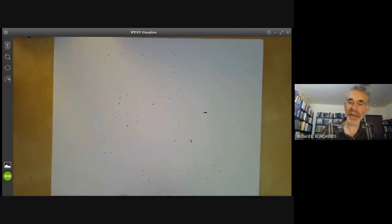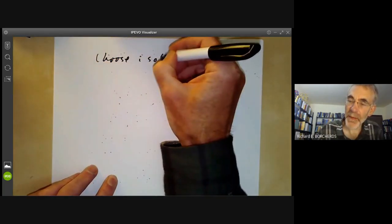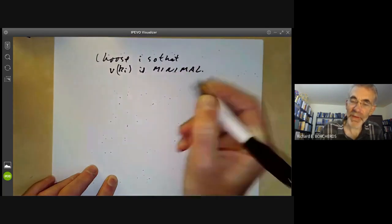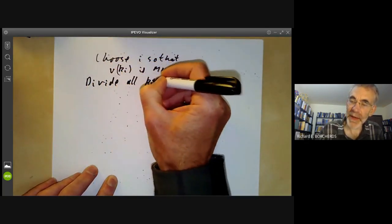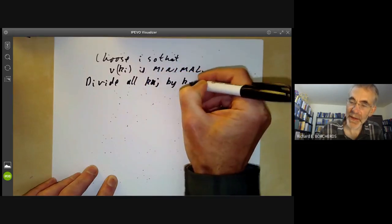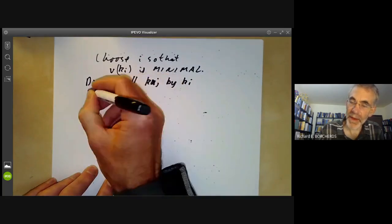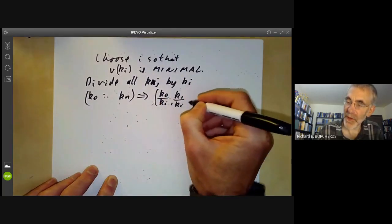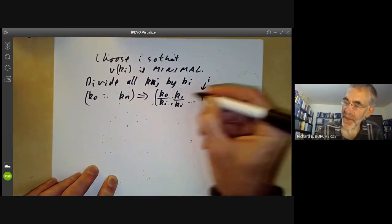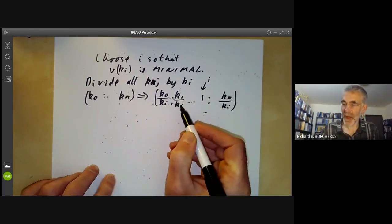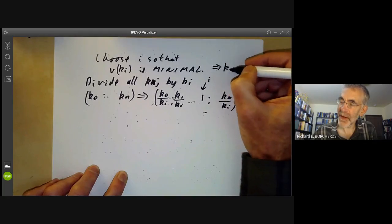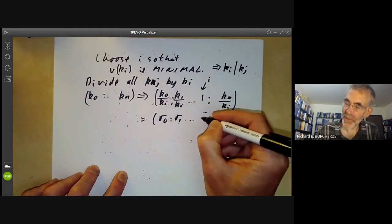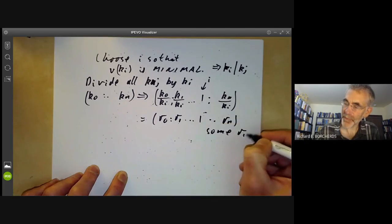And the answer is almost obviously yes. So we just choose I so that the valuation of KI is minimal. And then we divide all KN, so KJ, by KI. So K0 up to KN is then just the same as K0 over KI, K1 over KI. And then we get a one here in the ith position up to KN over KI. And because I is minimal, this implies that KI divides KJ for all J. So these are all in R. This is R0, R1 up to 1, Rn, the sum Ri. So this is a point.